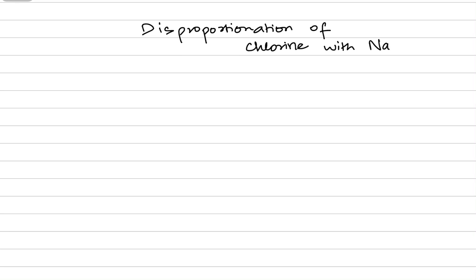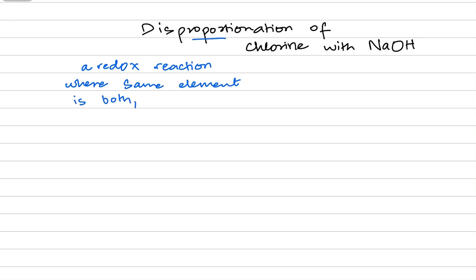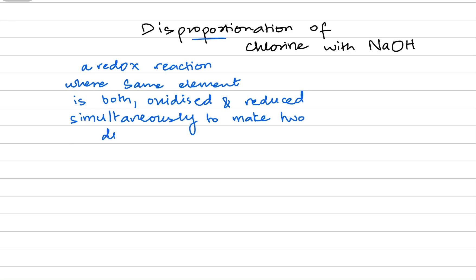The first question should be: what is disproportionation? It's a redox reaction where the same element is both oxidized and reduced simultaneously, to make two different products.